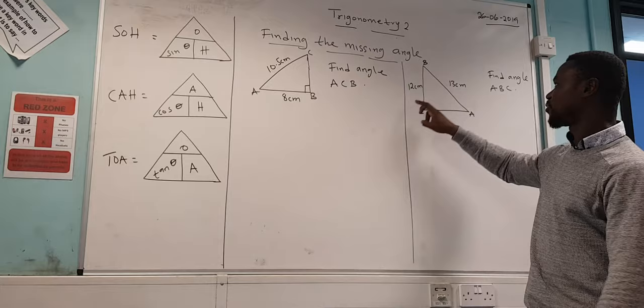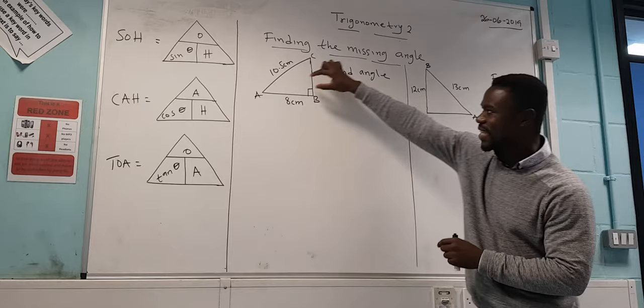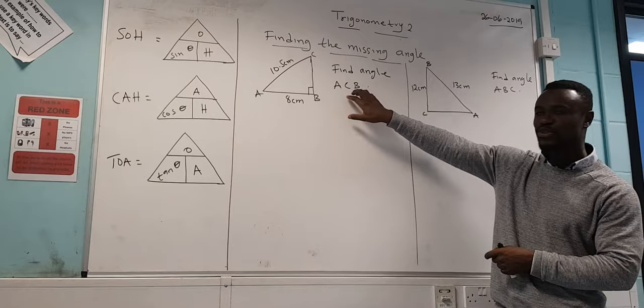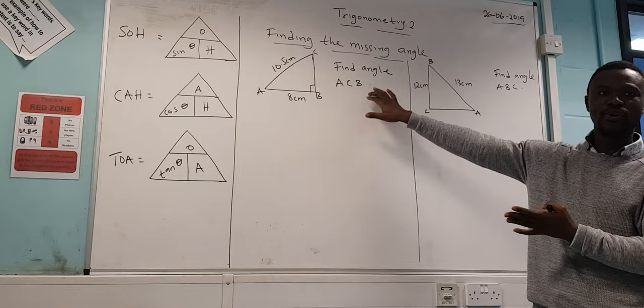They could ask the question in two ways. You could put an angle inside the shape for you to find, or you could write it in this way. So here they've used letters and I will show you where the angle would be when it's written in this form. So those are the only two ways you could ask the question.